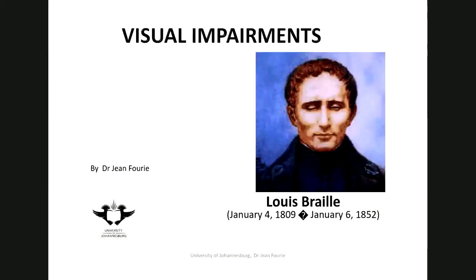Good morning everybody. Welcome to our next lecture of education studies first year second semester. Today we are continuing with our unit on visual impairments and we're going to be looking very specifically at some of the impairments that can arise in learners regarding the visual system. We spoke last week about the structure of the eye and the functioning of the eye, as a foundation for understanding the difficulties and complexities that can occur with learners who have visual impairments.